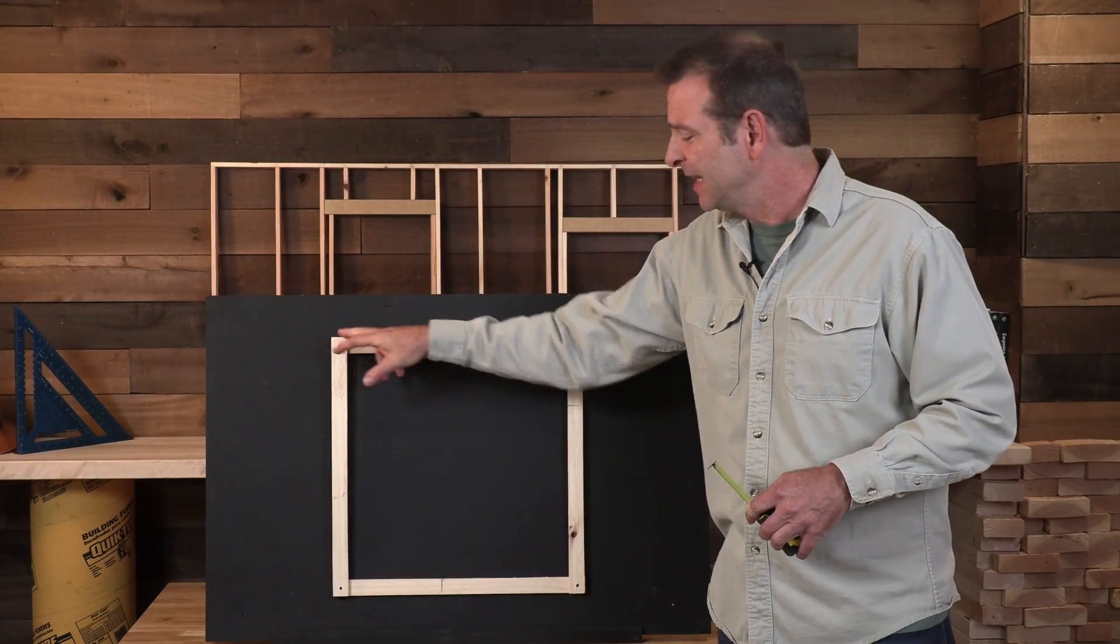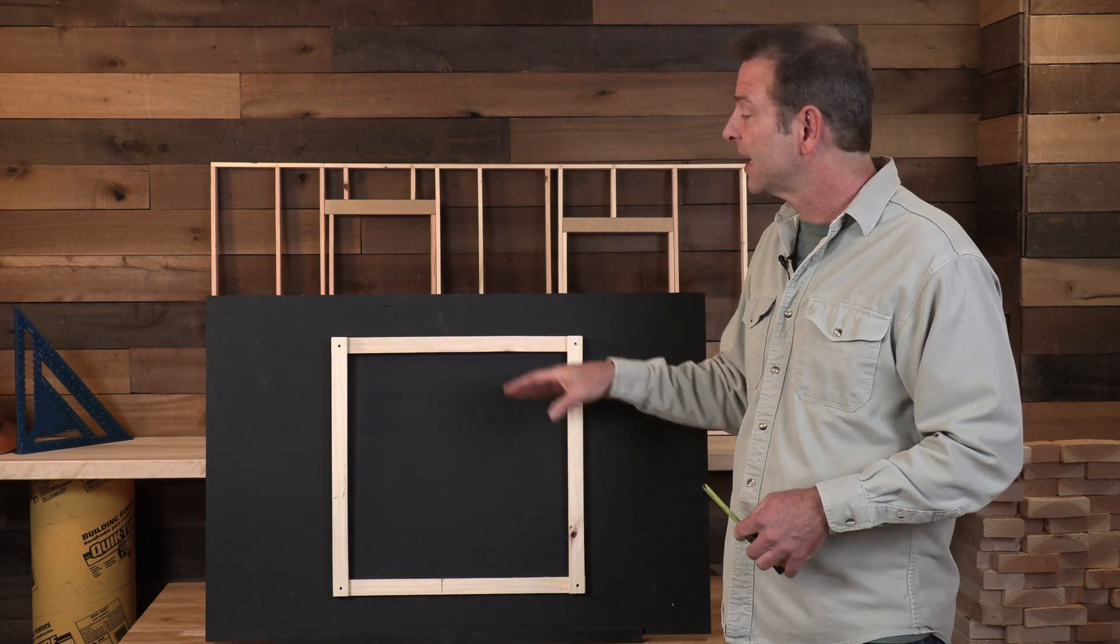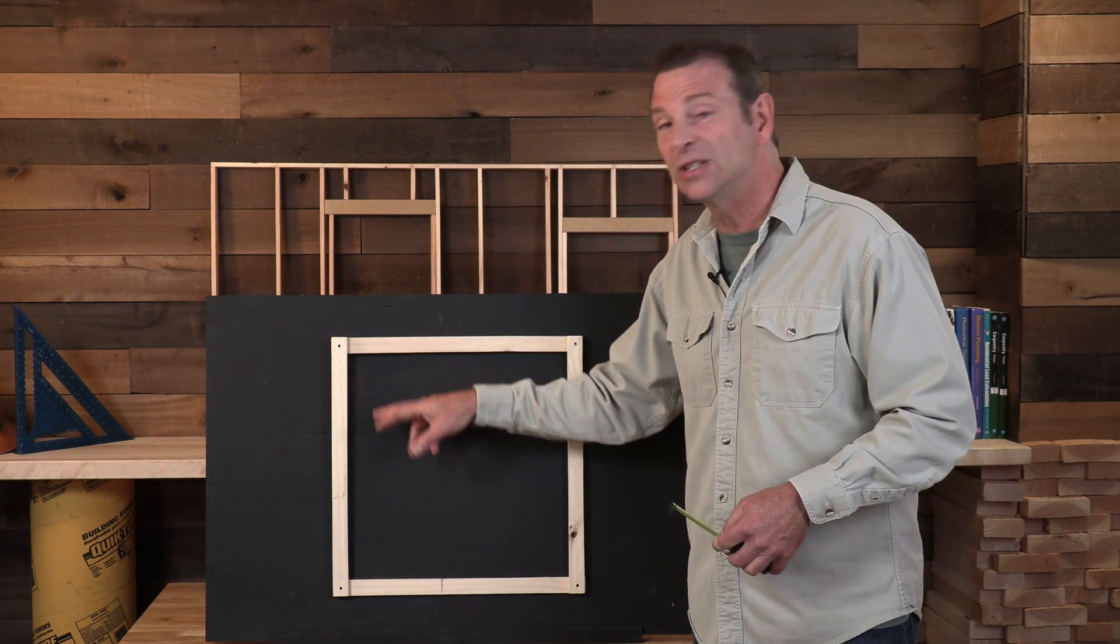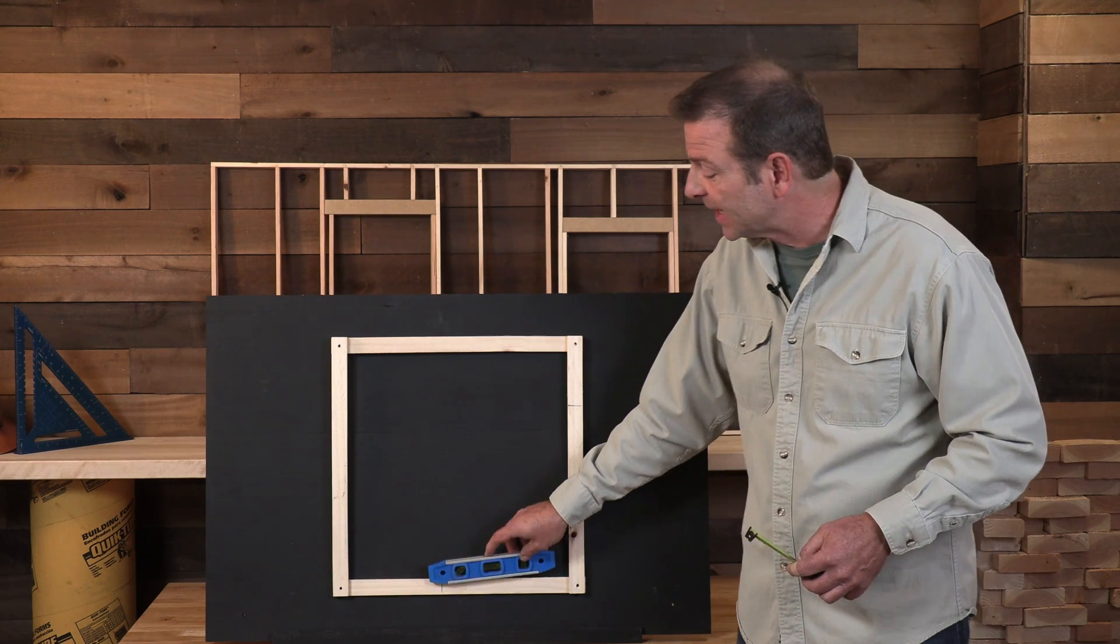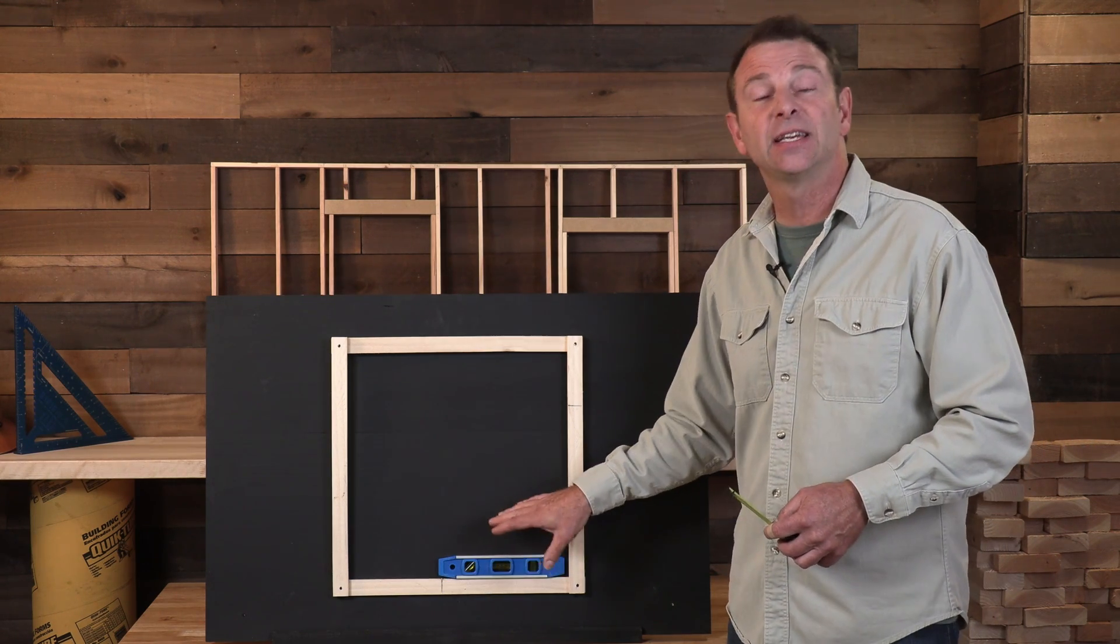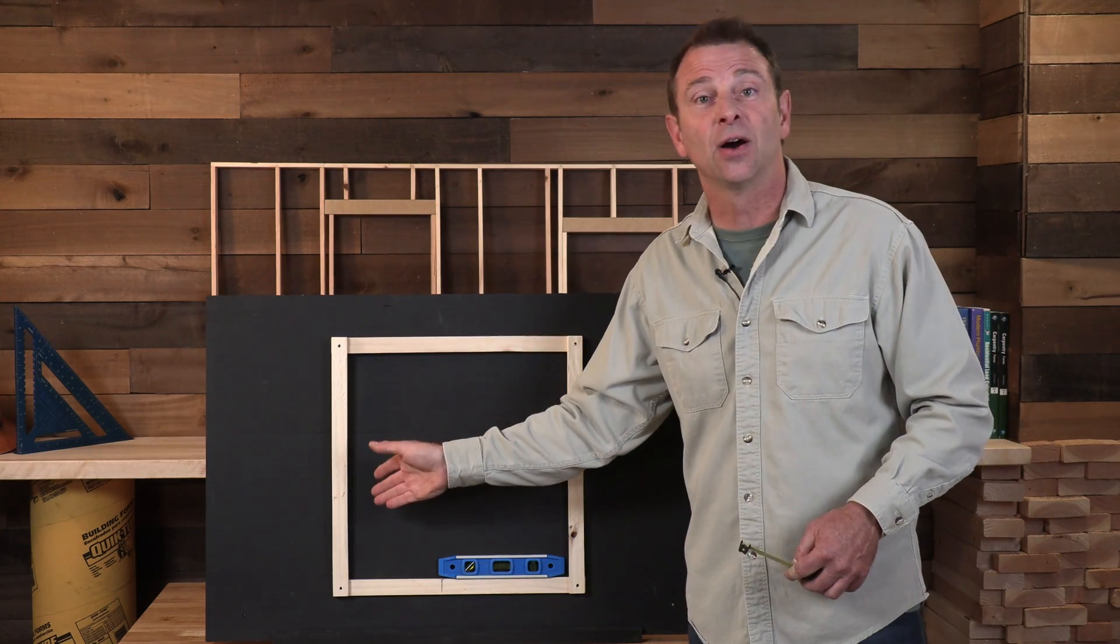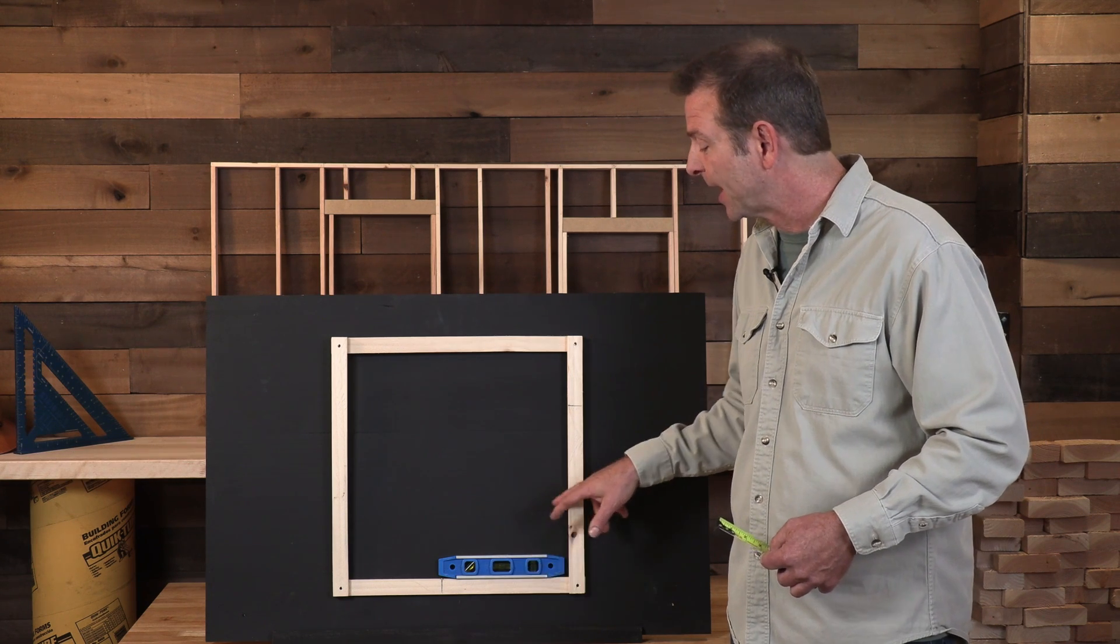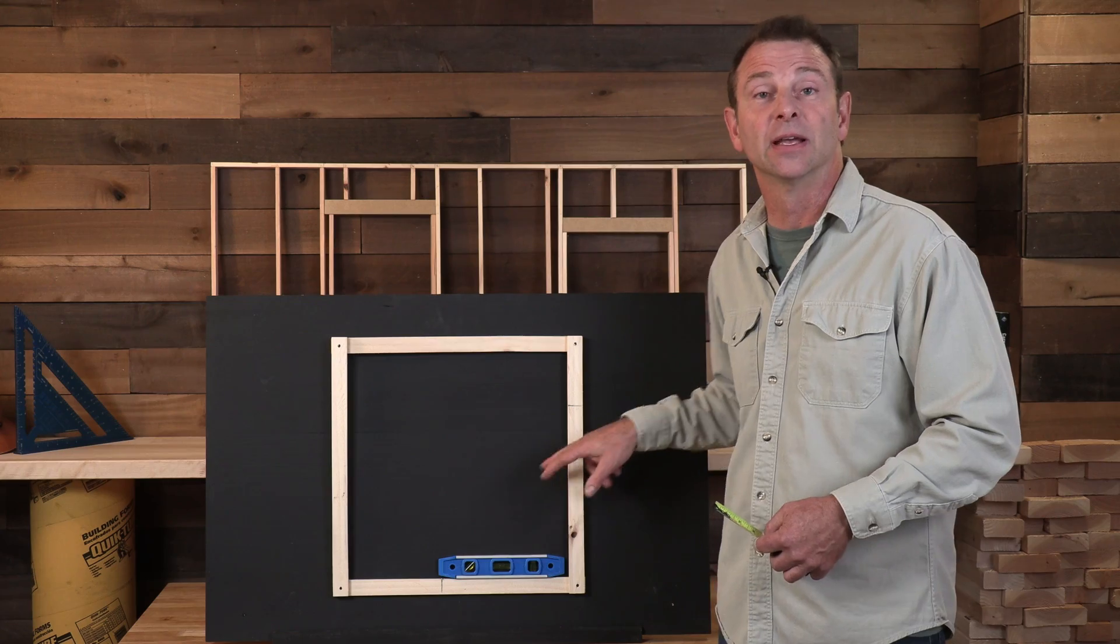So with just these two measurements, we know a lot of information. We know that our top and our bottom edges are parallel. We know that our sides are parallel. We know that each one of these corners is 90 degrees. And if we can verify that this edge here is level, we also know that these sides are plumb. We know that because of that earlier conversation about our 90 degree angle and our relationship between level and plumb.